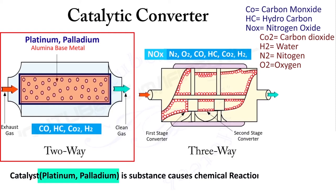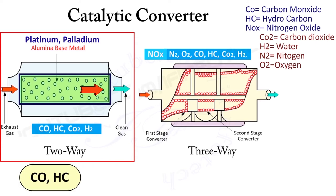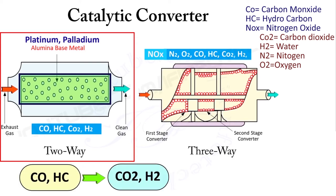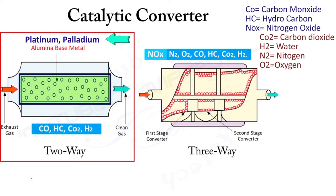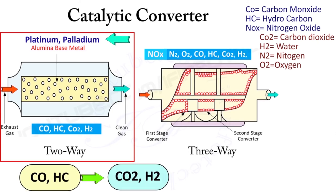The catalyst causes chemical reactions. As exhaust gases pass over the catalyst, toxic gases like CO are converted into harmless gases such as CO2 and H2O. Platinum and palladium are used as oxidation catalysts, which convert HC and CO into H2O and CO2.